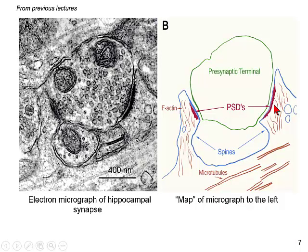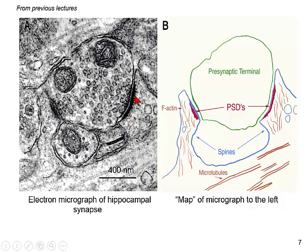Here is a blowup of a dendrite with two spines. They have dark regions in the electron micrograph — these are the postsynaptic densities, which are chock full of interesting proteins; that's why they stain dark. In the presynaptic terminal we have synaptic vesicles, mitochondria to ensure enough energy, and probably glia around. Microtubules are in the dendrite. In the postsynaptic density are the molecules thought to be responsible for most of synaptic plasticity.